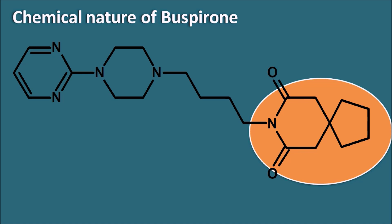So, to that spiro atom, this is the adjacent carbon, so we can start the numbering here: 1, 2, 3, 4, 5. We have completed the numbering to the smaller ring system in the spiro compound. Then we can continue the numbering to the larger ring system: 6, 7, 8, 9 and 10. So totally this spiro compound is having 10 atoms.